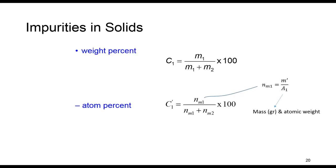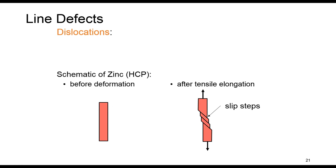Impurities in solids are denoted by weight percent that can be defined here, as you can see. M1 is the mass of component 1, and this is mass of component 2, so mass of each component divided by total mass times by 100. The atom percent can be found using this relation, in which N superscript M1 is number of moles for component 1, and this is number of moles of component 2 multiplied by 100. The number of moles is actually equal to M' divided by A1. One of them is mass, and the other one is atomic weight of the component.